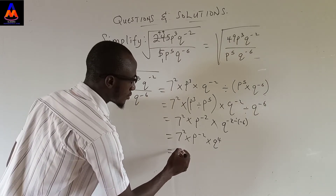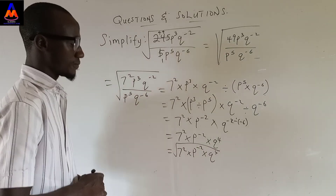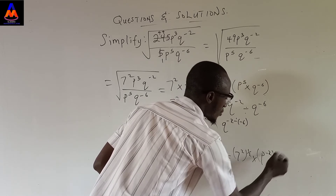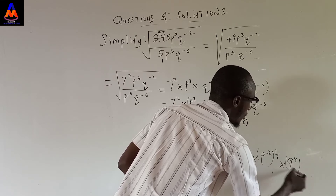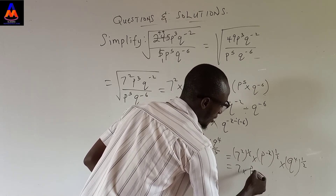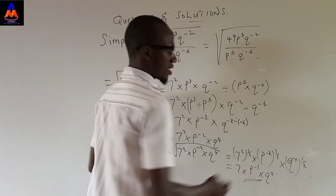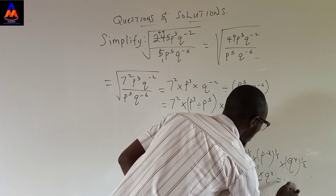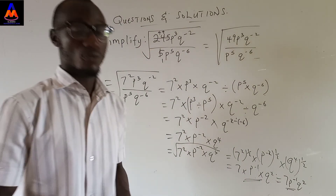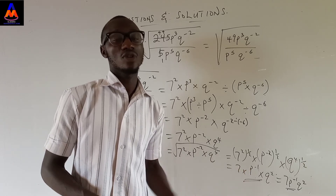So we are left with 7 raised to the power 2, times p raised to the power minus 2, times q raised to the power 4. Now we apply the square root, which means multiplying each power by one-half. This gives 7 times p raised to the power minus 1 times q raised to the power 2. That is the final answer: 7 p to the minus 1 times q squared. I'm not converting it to fraction form because we are dealing with indices. I think this should suffice for this example, but we still have some other concepts to consider.